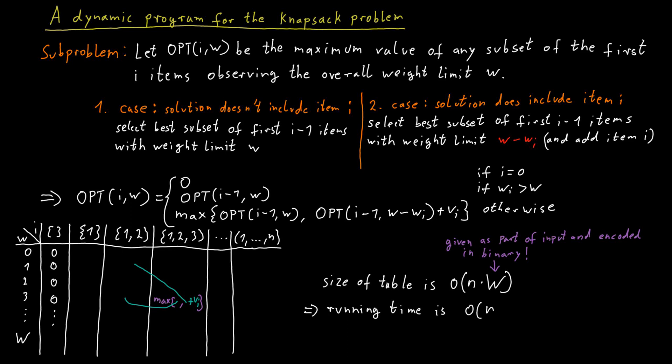So the value of capital W is exponential in the size of the encoding of that value. And therefore, if W is large, capital W is large, this is not necessarily a polynomial time algorithm. But the important thing to notice here is that the only reason why it's not a polynomial time algorithm is because the weights of the items can be large compared to the number of items in the input, for example.